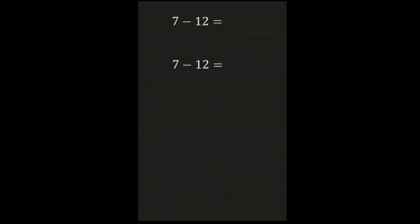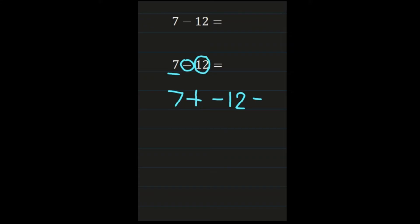For our first example, we have seven minus twelve. We're going to follow those steps: the first number, which is a positive seven, stays exactly how it is — a positive seven. Then that subtraction sign we're changing to addition. Then we're looking at this positive twelve, and our step is to change the sign of our second number, so the positive twelve becomes a negative twelve. You may want to put parentheses around this negative twelve so you can see exactly what you've got.